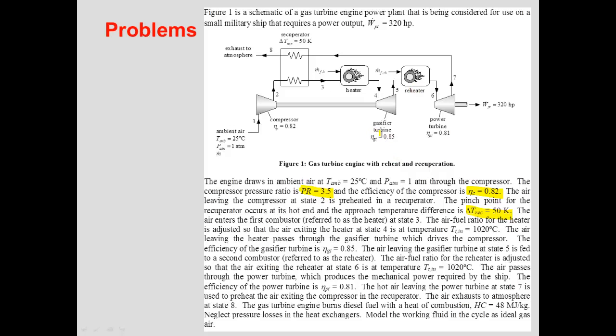The gas-fired turbine has an isentropic efficiency of 0.85. Notice we are not given the pressure ratio — it will be tuned such that the power produced matches what the compressor needs. After expanding through the gas-fired turbine, we reheat in the second combustor, again tuned so that the exit temperature is 1020 degrees Celsius, similar to the heater.